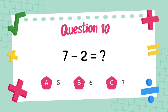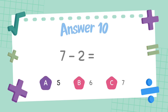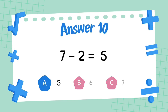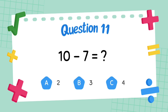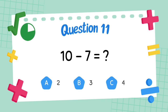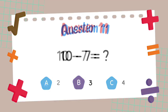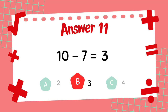What is 7 minus 2? The answer is 5. What is 10 minus 7? The answer is 3.